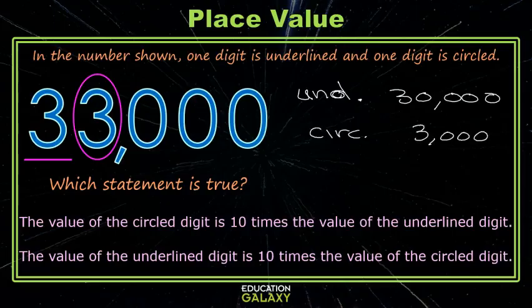So, how do these two numbers relate to each other? Well, to get from my circled digit to my underlined digit, I would have to multiply by 10. Let's see which statement fits. Is the circled digit 10 times the underlined digit? No. Is the underlined digit 10 times the circled digit? Yes. That's correct.